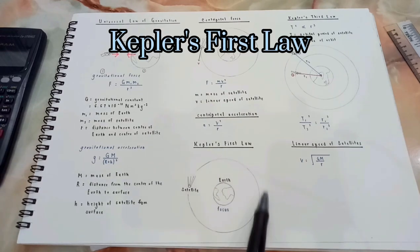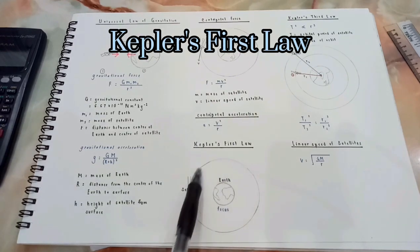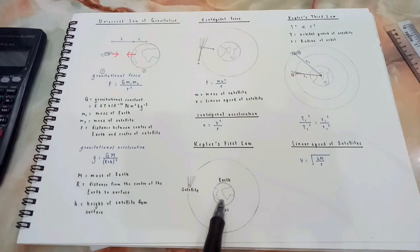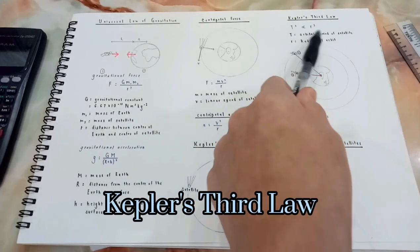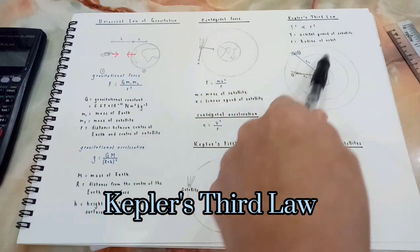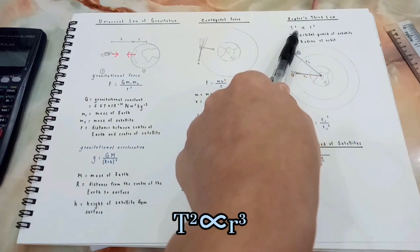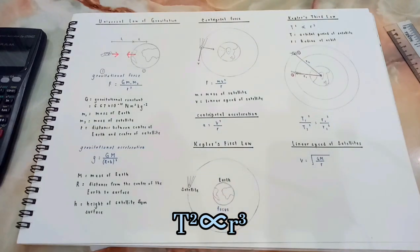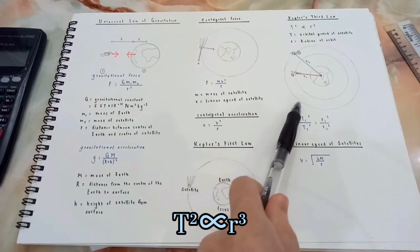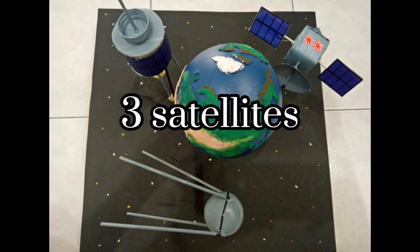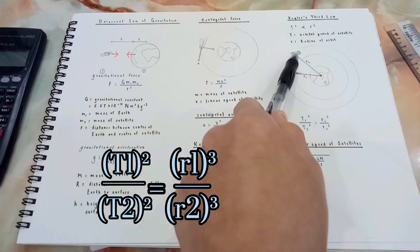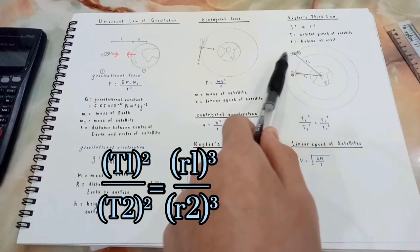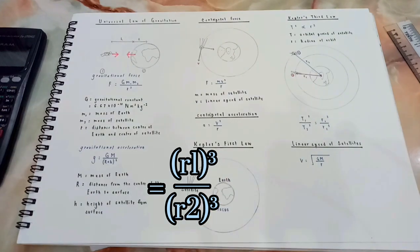For Kepler's first law in this model, the satellites now orbit the Earth as one focus in an almost elliptical orbit. The Kepler's third law can be used too, that the square of the orbital period of satellites is directly proportional to the cube of radius of the orbit. Because there are 3 satellites in this model to compare with, the formula T1² over T2² can be used.